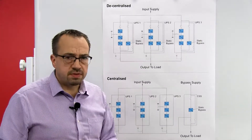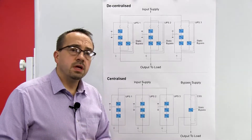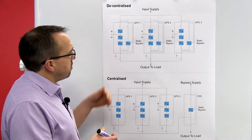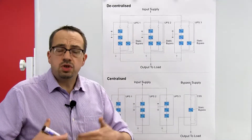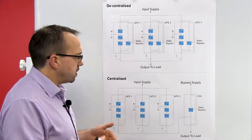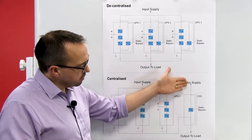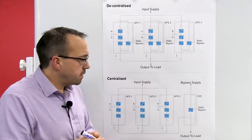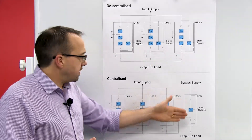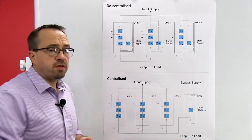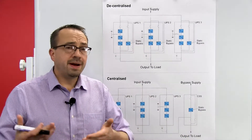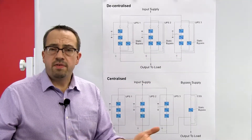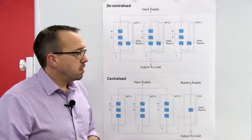The next consideration is resilience, which breaks down into two areas. In terms of operational resilience, both systems are in most cases just as reliable and resilient as each other. However, some people consider the single bypass module in a centralized system to be a potential single point of failure — which it is. Adding a second bypass module to remove that single point of failure would simply mimic the decentralized approach and would be a very cost-prohibitive method of installation.